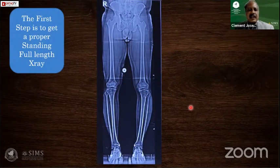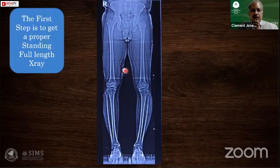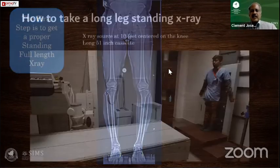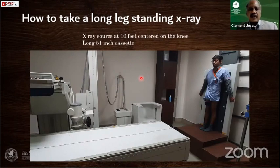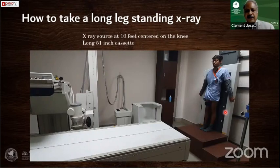The first step is to get a proper standing full-leg X-ray. You can use a three-centimeter metal ball strapped to the inner aspect of the thigh, lying in the same coronal plane as the bone — this calibration ball helps calibrate your measurements. The X-ray source is kept around 10 feet, the beam is centered on the knee, and we use a long cassette. We have a special cassette with four film panels, and software calculates and stitches the film. Long cassette systems are also available from Indian manufacturers for as low as two lakh rupees.